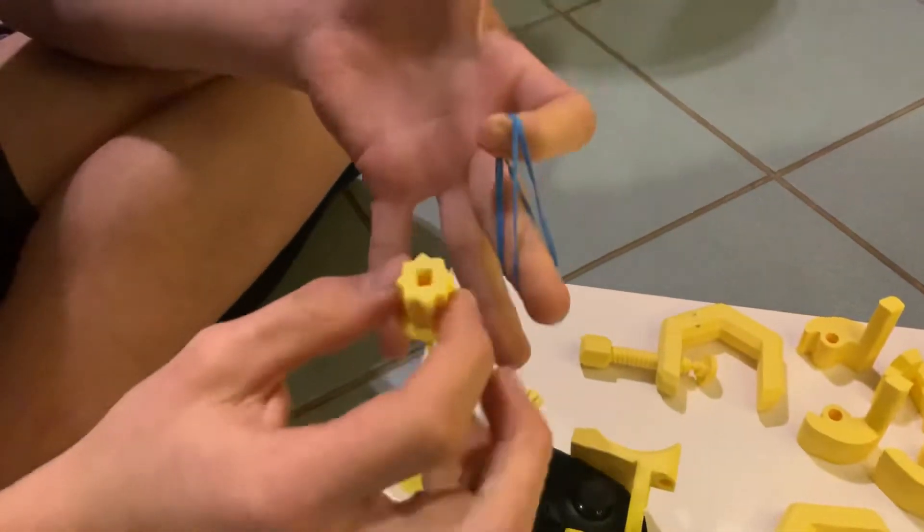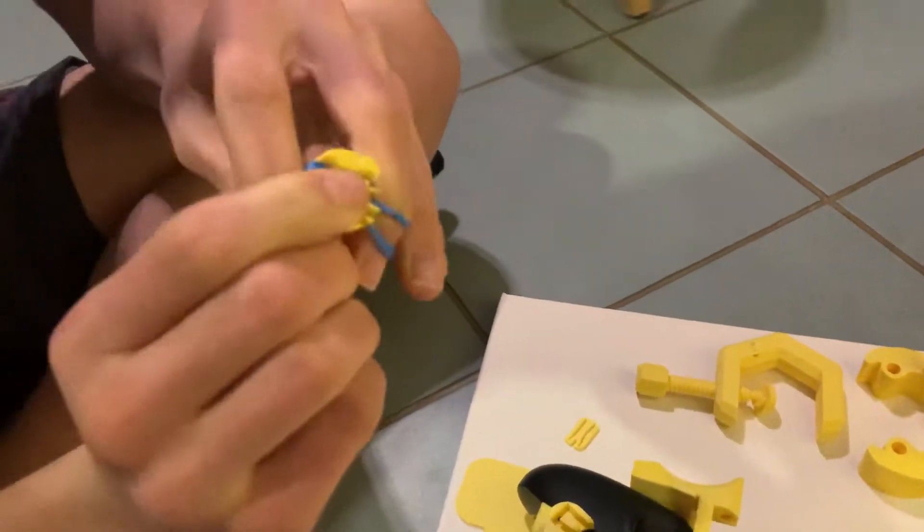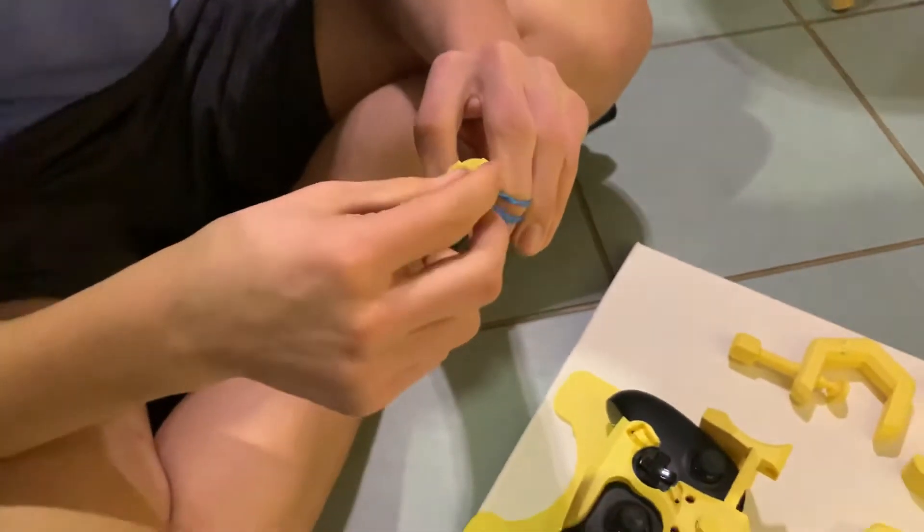First of all, you take this part, put it through the bottom like this and then you take the little bottom part and you put it on there.